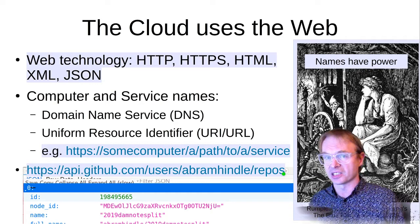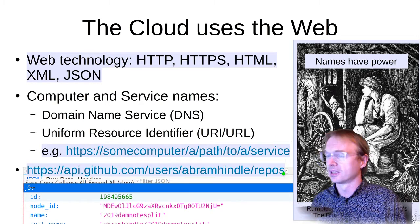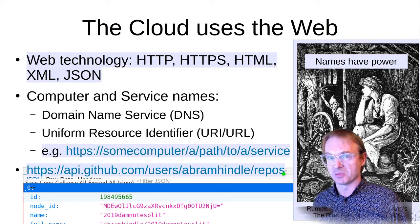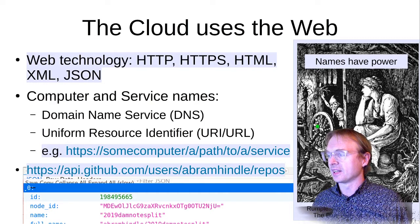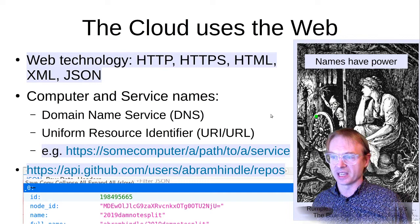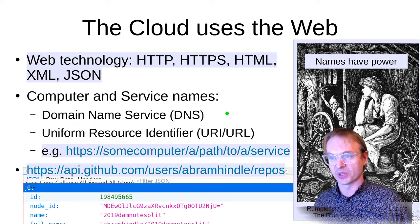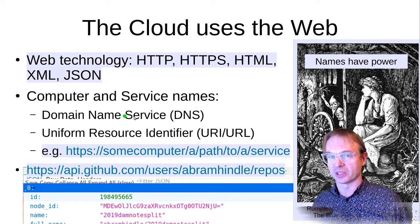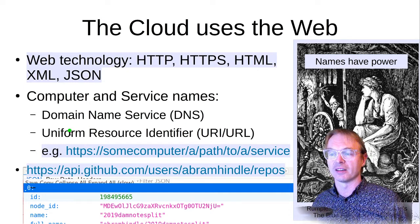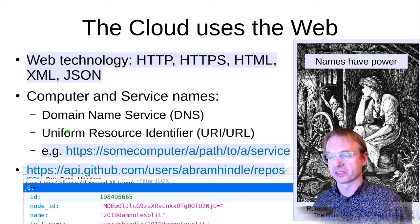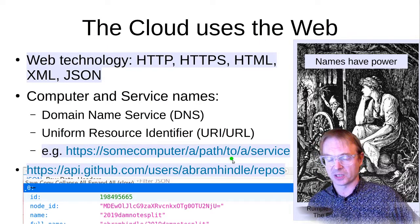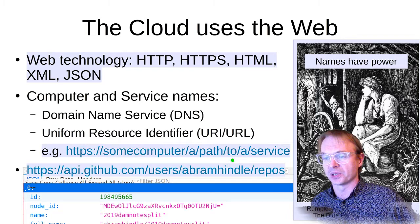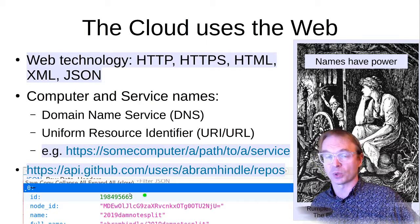The web uses various technologies such as the Hypertext Transport Protocol HTTP or HTTPS, markup languages to draw web pages like HTML, or data languages such as XML or JSON. What makes these really work is the magic of names — names have power. Like in the story of Rumpelstiltskin, knowing his name gave you control. On the web we have the domain name service giving us things like github.com, and we have URIs or URLs such as https://api.github.com/users/abramhindle/repos — which gives a computer-readable listing of my GitHub projects.